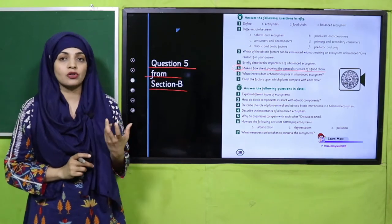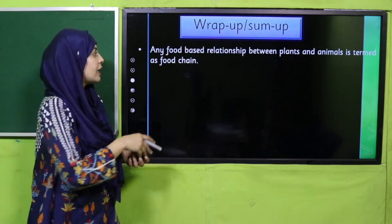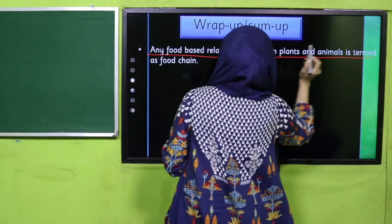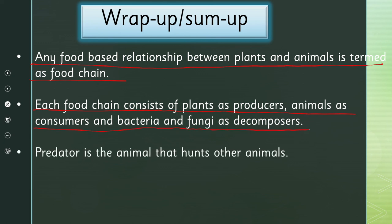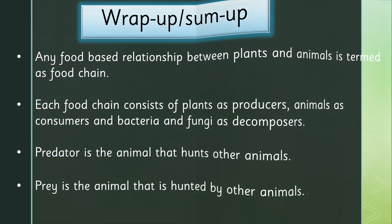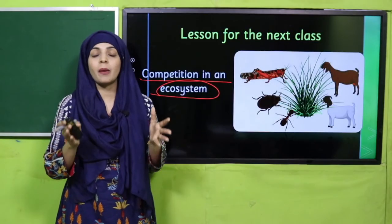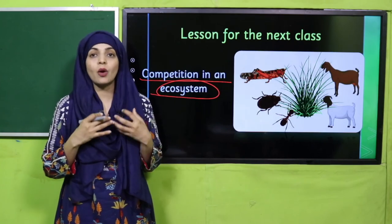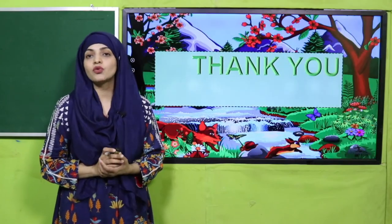Today we have learned that any food-chain-based relationship between plants and animals is termed a food chain. Each food chain consists of plants as producers, animals as consumers, and bacteria and fungi as decomposers. A predator is the animal that hunts other animals, and prey is the animal that is hunted. In the next class we will discuss competition in an ecosystem. I hope you enjoyed today's lecture — keep everybody around you safe, have a good day, thank you so much.